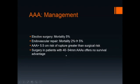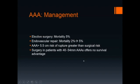For smaller aneurysms, between 4 and 5.4 centimeters, surgery offers no survival advantage. For aneurysms under 5.5 centimeters, there are medical managements that reduce the rate of growth. These include smoking cessation, and trials are underway evaluating beta blockers, statins, antiplatelet drugs, and ACE inhibitors.